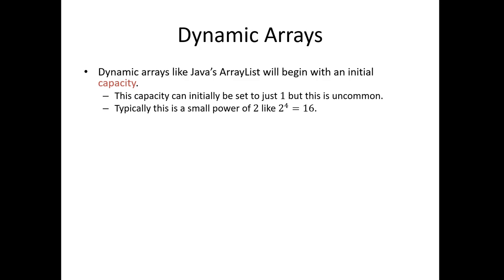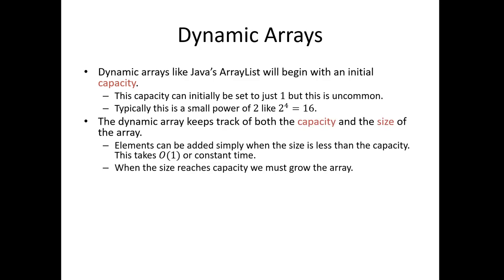This is the capacity of our array. Just like any other list, we also keep track of the size — the actual number of elements stored in there. The size should always be less than or equal to the capacity. When we add a new element, as long as the size of the list is less than the capacity, we have space available and we can just add it very simply using our random access. As we already argued, this is going to take us O(1) time, or constant time.